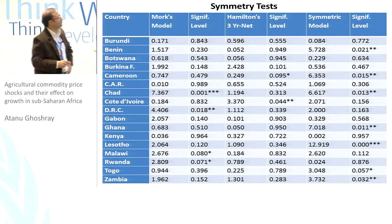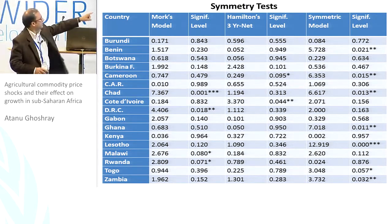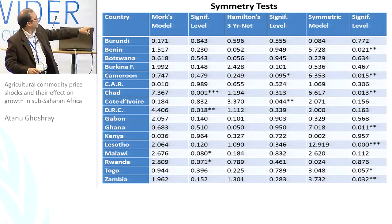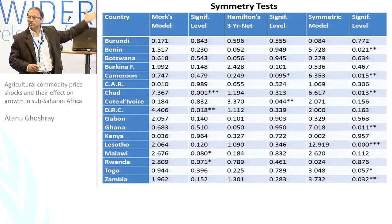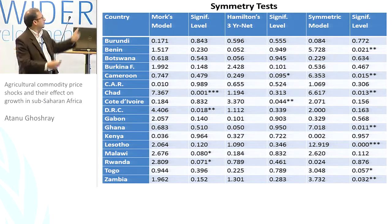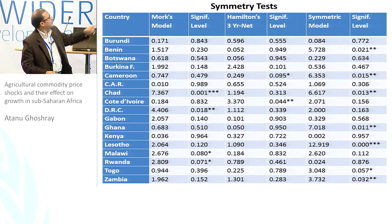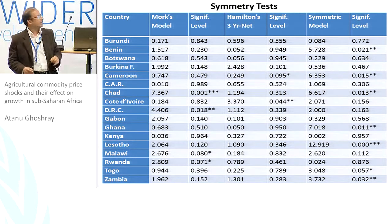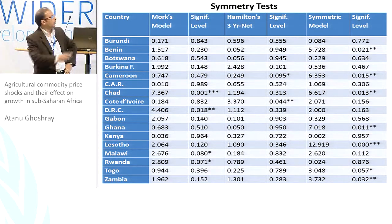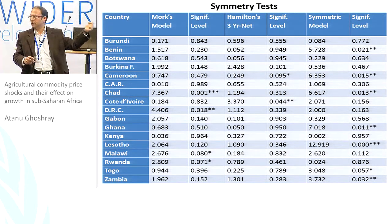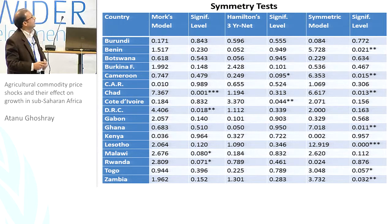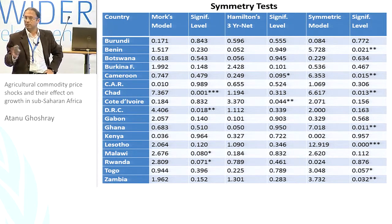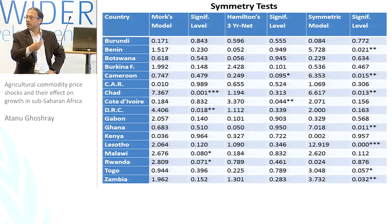Looking at the Mork-type model tests, four different countries appear to be affected by asymmetric shocks — positive shocks can be separated from negative shocks and tend to be quite significant. In the Hamilton model, there is evidence of only two cases, but for Cameroon the linear model gives a better fit by model selection criteria. So for the Hamilton-type model, only one case remains — Cote d'Ivoire — which is a very important country given its fair dependence on a single commodity, cocoa.